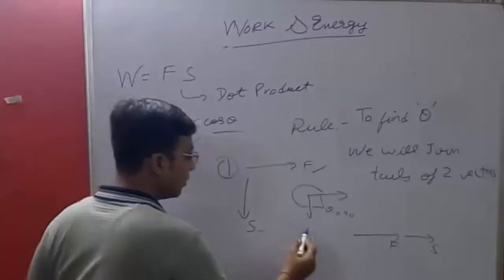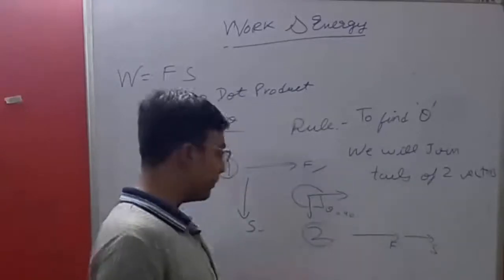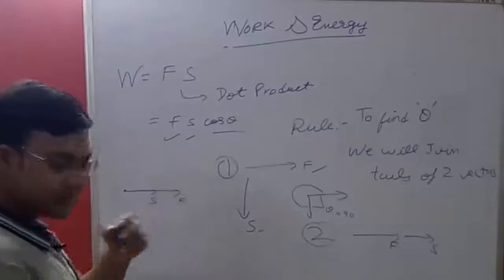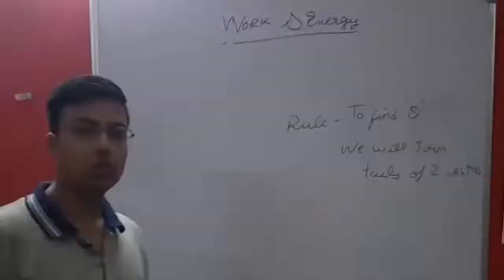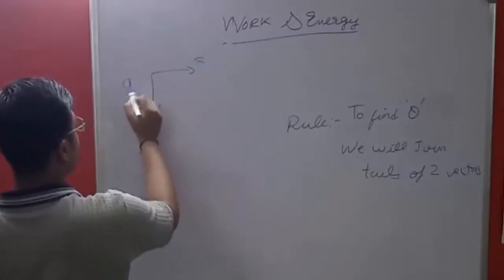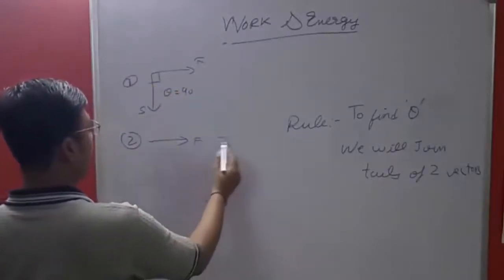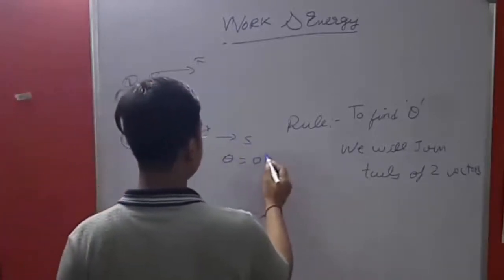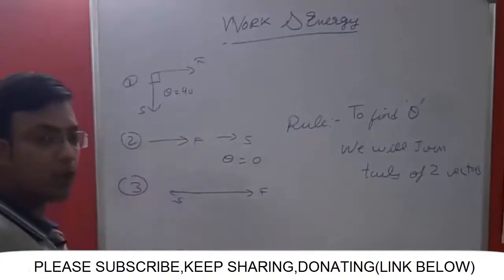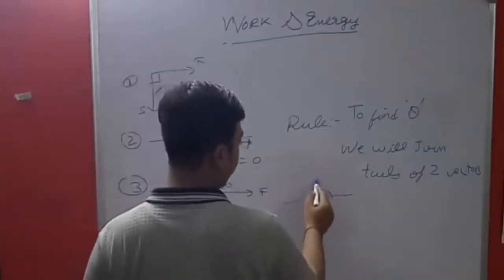First case: force is in one direction and displacement is in a different direction — then theta is 90 degrees. Second case: force and displacement are both in the same direction. Here, joining the tails gives theta = 0 degrees. Third case: force is in one direction and S is in the opposite direction. Joining the tails gives theta = 180 degrees, because a straight line has an angle of 180 degrees.